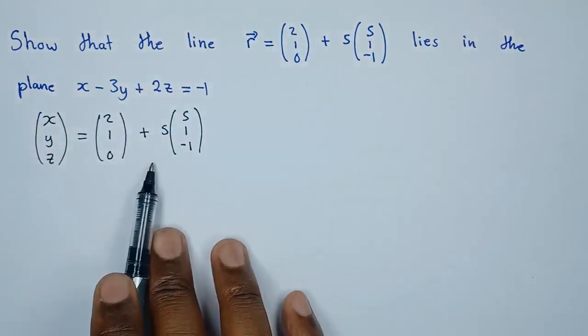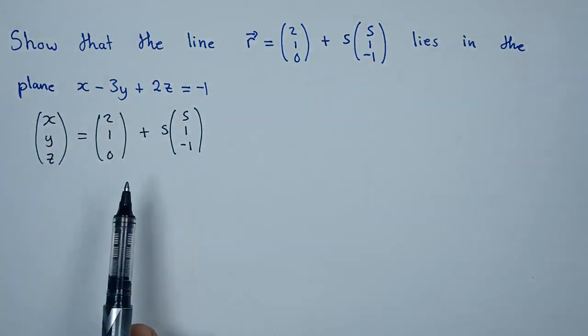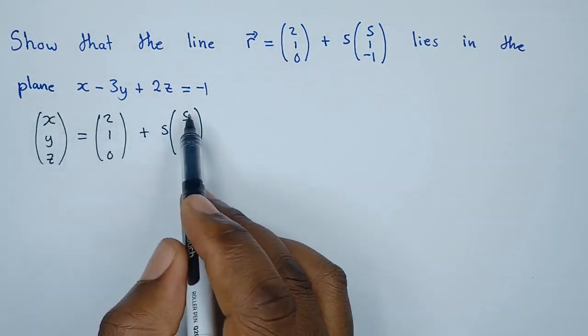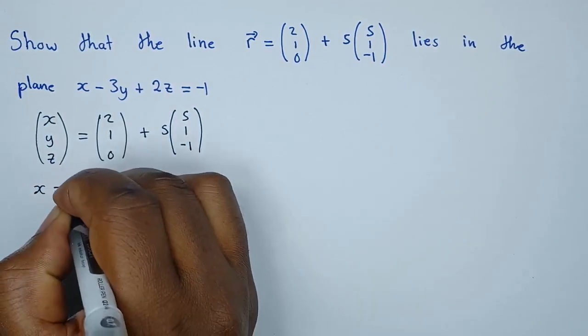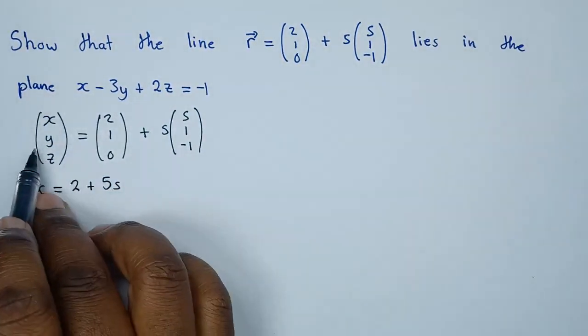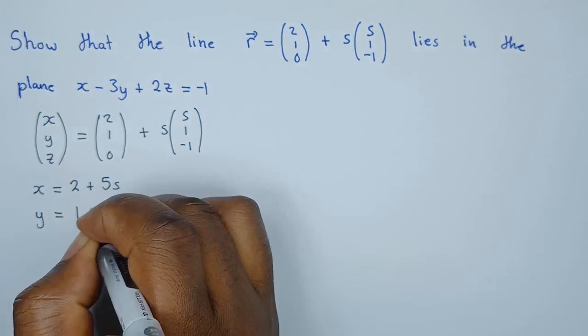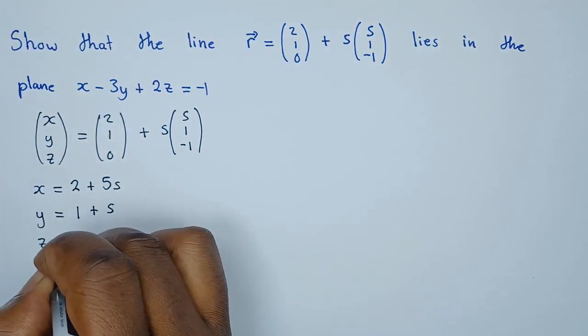To convert this into parametric form, we'll take everything in the first column: x equals 2 plus 5s. In the second column, y equals 1 plus s. In the third column, z equals 0 minus s.